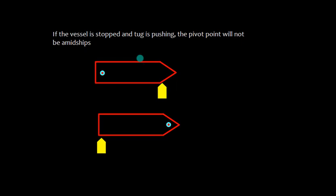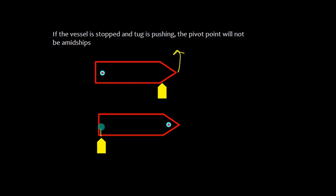Now let us study one more interesting part. If the vessel is stopped and a tug is pushing from forward, the pivot point will not be amidships — it will be somewhere aft, and the vessel is going to turn accordingly. Similarly, if the tug starts pushing from aft, the pivot point will be somewhere forward and the vessel will turn in the opposite direction.